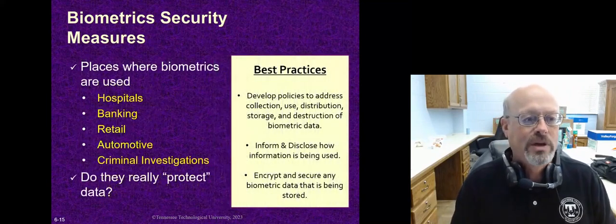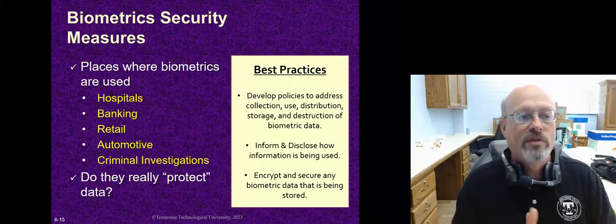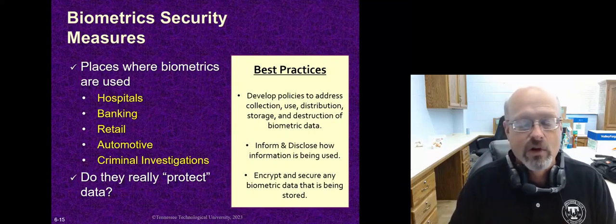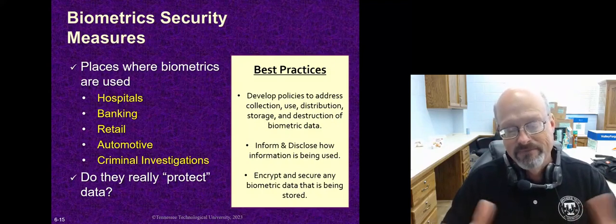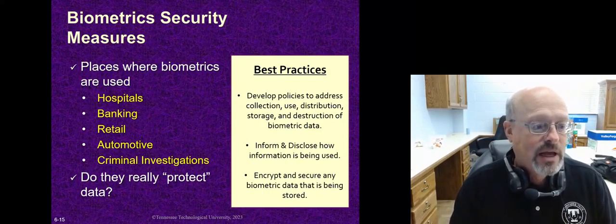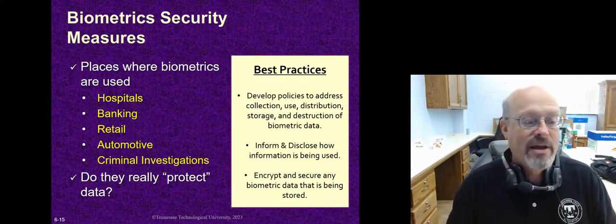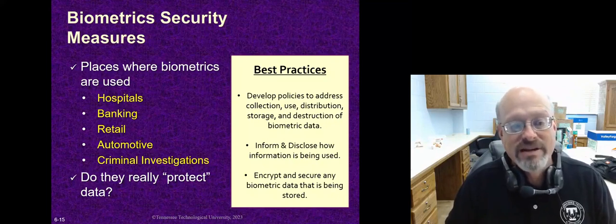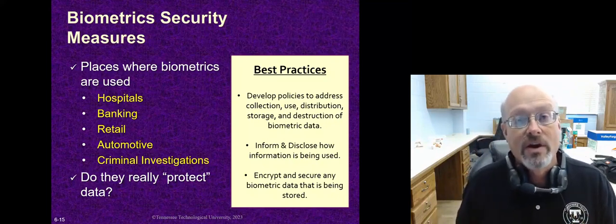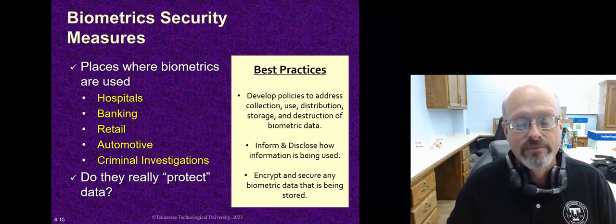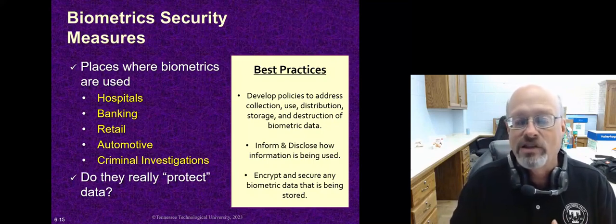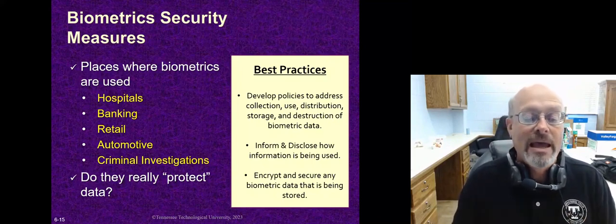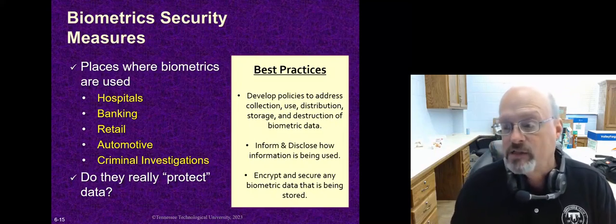If you do use biometrics, you need to decide where these are used. They're often used in hospitals and banking — one of my banks requires a thumbprint to get into the vault where the safety deposit boxes are. Automotive can sometimes have biometrics, where you use a thumbprint to start the car or open the door. Criminal investigations obviously use biometrics a lot. Whether they really protect your data depends — if they're secure, they do; if somebody breaks them, they don't. Best practices include developing policies to address the collection, use, distribution, storage, and destruction of that data; informing people how the information is being used; and encrypting and securing any biometric data that's being stored.